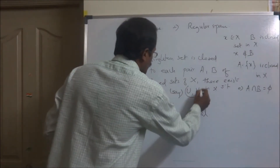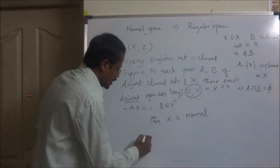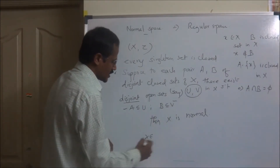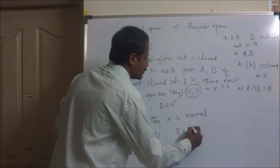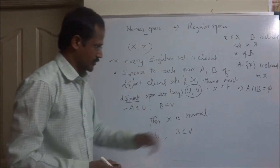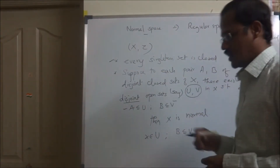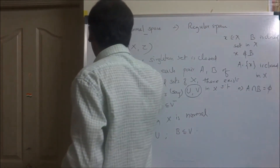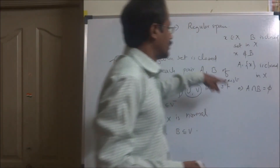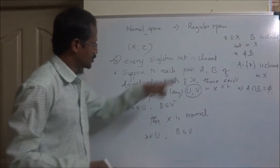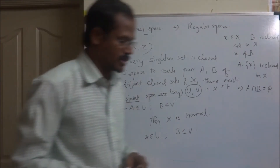Since X is assumed to be a normal space, there exist disjoint open sets U and V with A contained in U and B contained in V, meaning x belongs to U and B is contained in V. This is exactly the requirement for the space to be regular. We have already established that every singleton set is closed, and we have now proved that any point and a closed set not containing it can be separated by disjoint open sets. Therefore the space is regular.